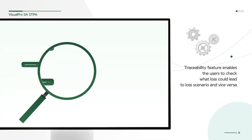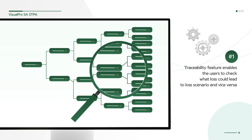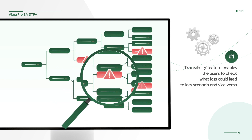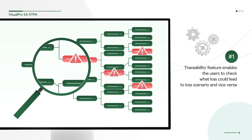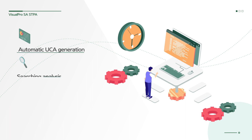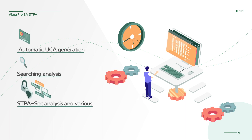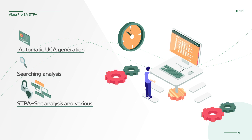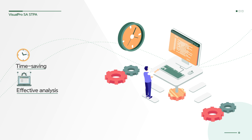First, the traceability feature enables users to check what loss could lead to a loss scenario and vice versa. Furthermore, it supports automatic UCA generation based on process model, searching analysis results, STPA-SEC analysis, and various libraries. It enables you to save time and get the most effective analysis.